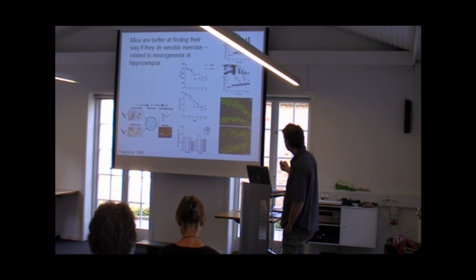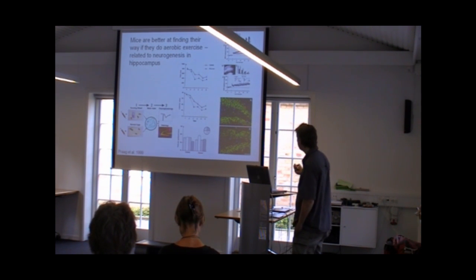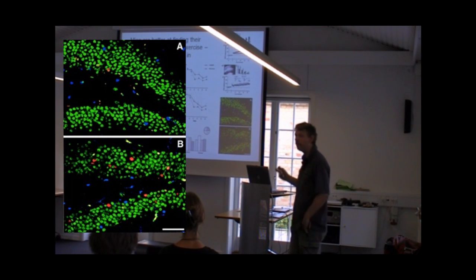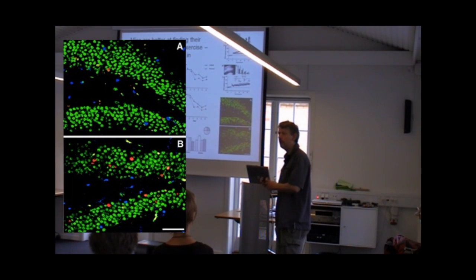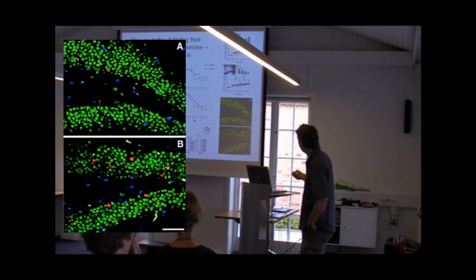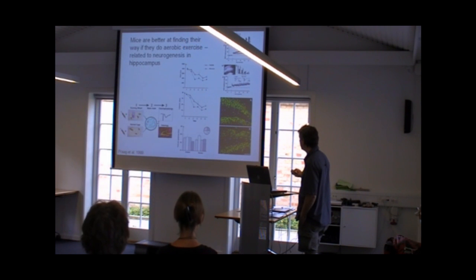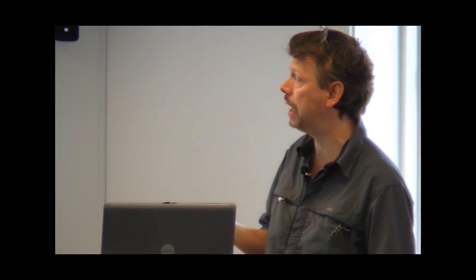What they also demonstrated was, and that's what is shown down here, so this is a section from the hippocampus, and what you should concentrate on is those red ones, which are just markers of newborn neurons. So what they suggest is that here in the running group that there are much more neurogenesis, that there are new cells which are developed to a much higher extent because of the aerobic exercise than in the other rats.